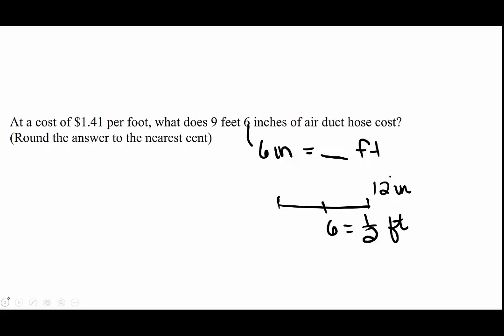6 inches is half a foot. And I know that a half is equivalent to 0.5 as a decimal. So now we're going to take $1.41 times 9.5. Now multiply that out by hand, and you get 13.395.